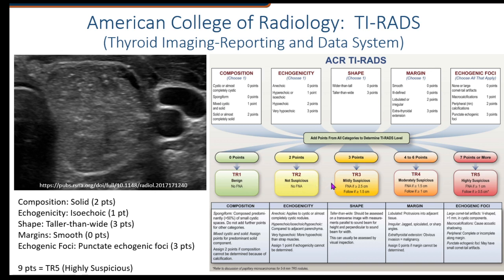Looking at our TIRADS rating, seven points or more puts us at a TR-5 rating — highly suspicious. Then we decide how to approach it. If it is large enough — at least a centimeter — it needs to be biopsied. If less than a centimeter, we follow it. These are slow-growing cancers, so we're not talking about an emergency situation. When they're below one centimeter, we don't do anything until it gets to a centimeter or greater. If it is a centimeter or greater, as this one clearly is, then we stick a needle in there and get a biopsy done.